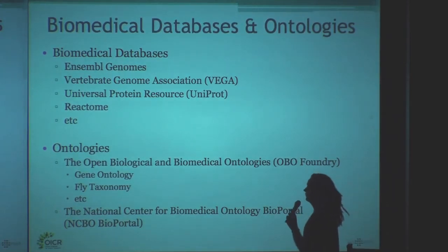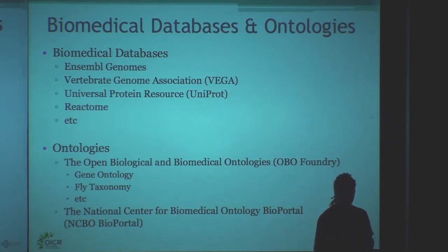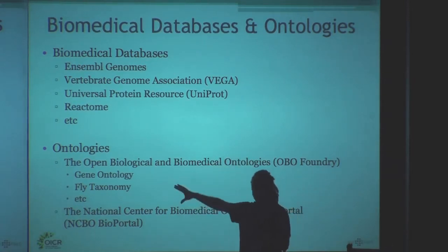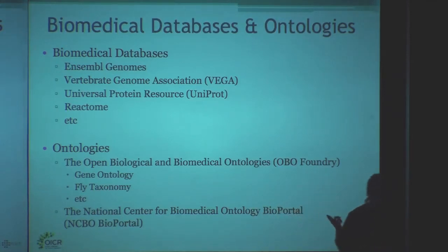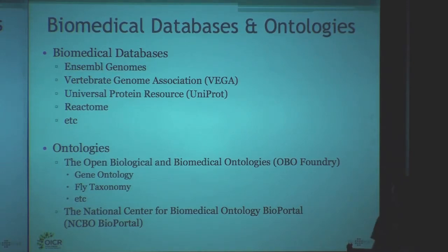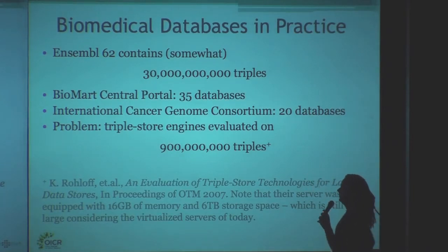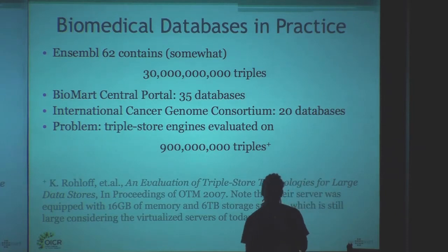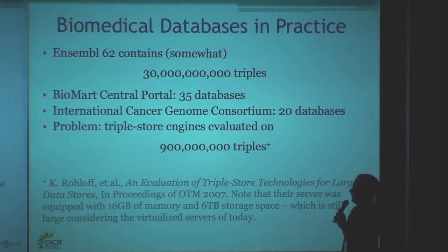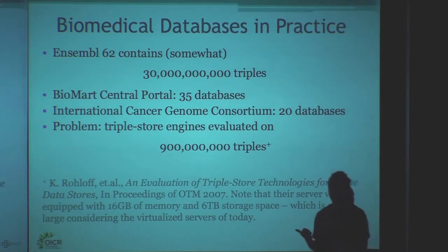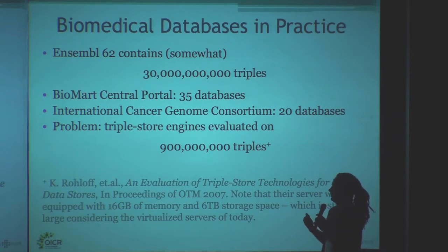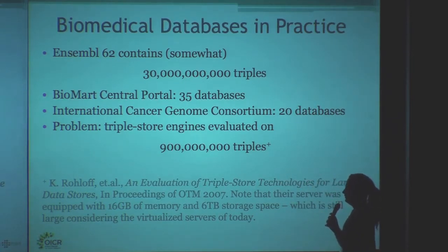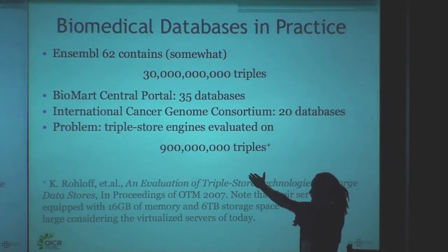Back to the topic about SPARQL, RDF, and BioMart. There are these big biological databases like Ensembl, Vega, UniProt, Reactome — and on the other hand you have the ontology. But these are usually separate; they are not very well incorporated, except for UniProt now. In practice, Ensembl contains an estimated 30 billion triples. The BioMart central portal has 35 databases, and the ICGC also has 20 databases. The largest triple-store engines are rated at less than a billion triples.